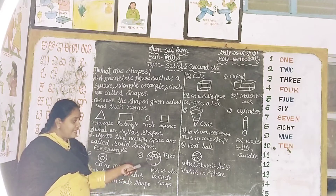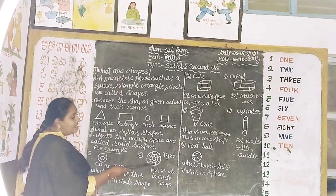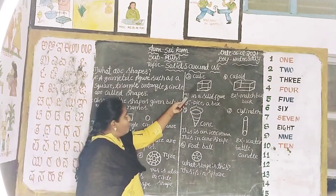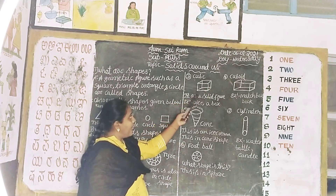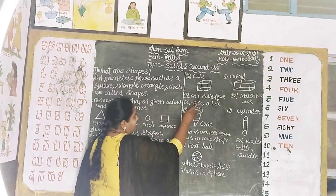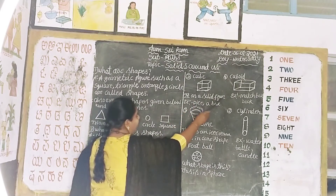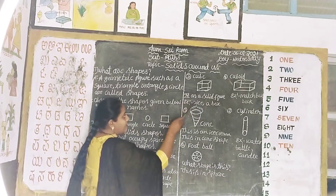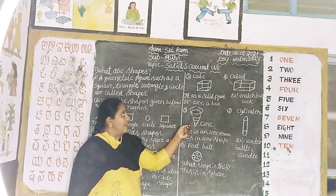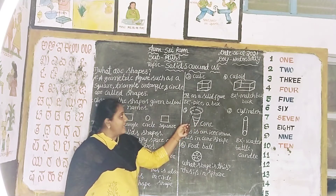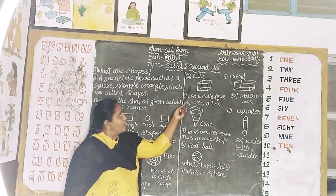This is also in circle shape. C-U-B-E. This is a cube. It has a solid figure. Example: dice, a box.